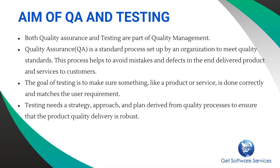The aim of both quality assurance and software testing is to produce better quality software. Both quality assurance and testing are part of something called quality management — both are working towards producing better quality software. Quality assurance is mainly about the process that is followed; we follow the process in order to avoid any mistakes that can happen during software development. You set the standards and follow the right process.